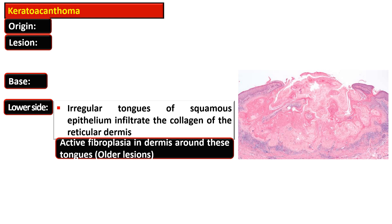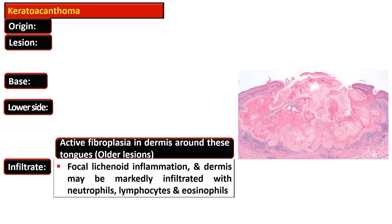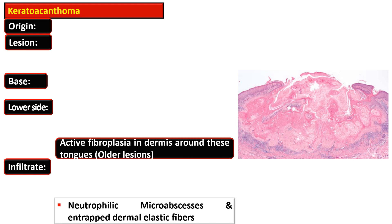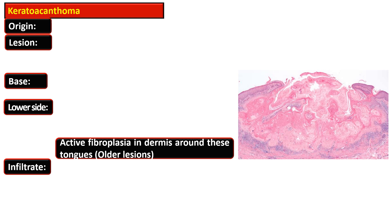Active fibroplasia in the dermis is present around these tongues, which denotes older lesions. There is focal lichenoid inflammation, and the dermis may be markedly infiltrated with neutrophils, lymphocytes, and eosinophils. There is presence of neutrophilic microabscesses and intraepidermal elastic fibers. Due to its unpredictability and cases of metastasis and local infiltration, early excision is recommended.